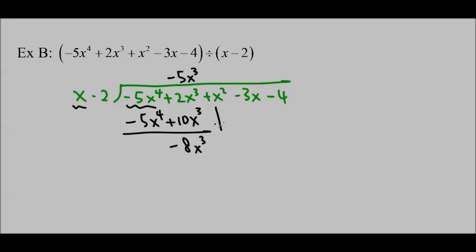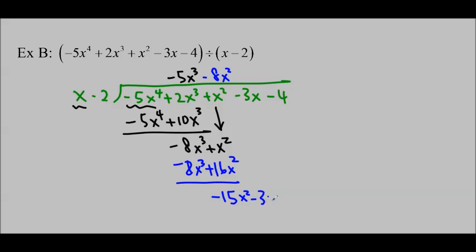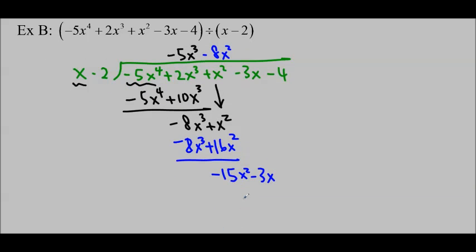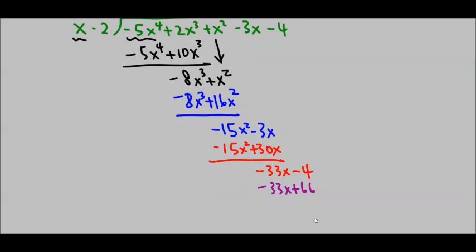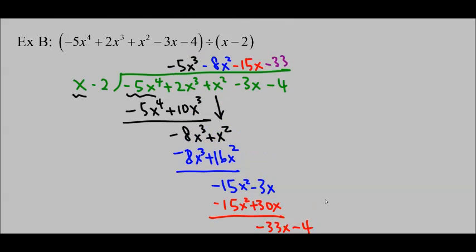It gives me negative 5x to the 4 plus 10x cubed. Subtract them off and you get negative 8x cubed. Bring the x squared down. Subtract off 8x squared, multiply to get 16x squared, and subtract again to get negative 15x squared. Bring the number down and continue. Negative 15x. Multiply both terms and subtract again. Bring the negative 4 down. It's going to be plus negative 33. Multiply one more time, subtract one more time, and we get our remainder: negative 70.